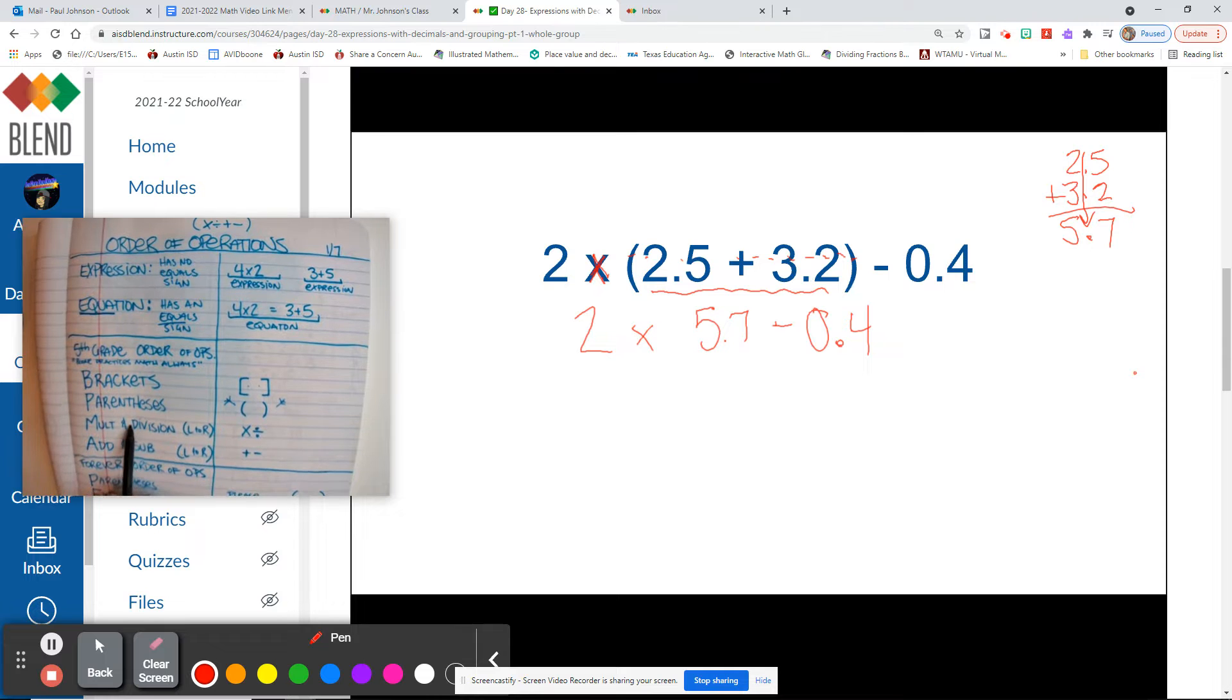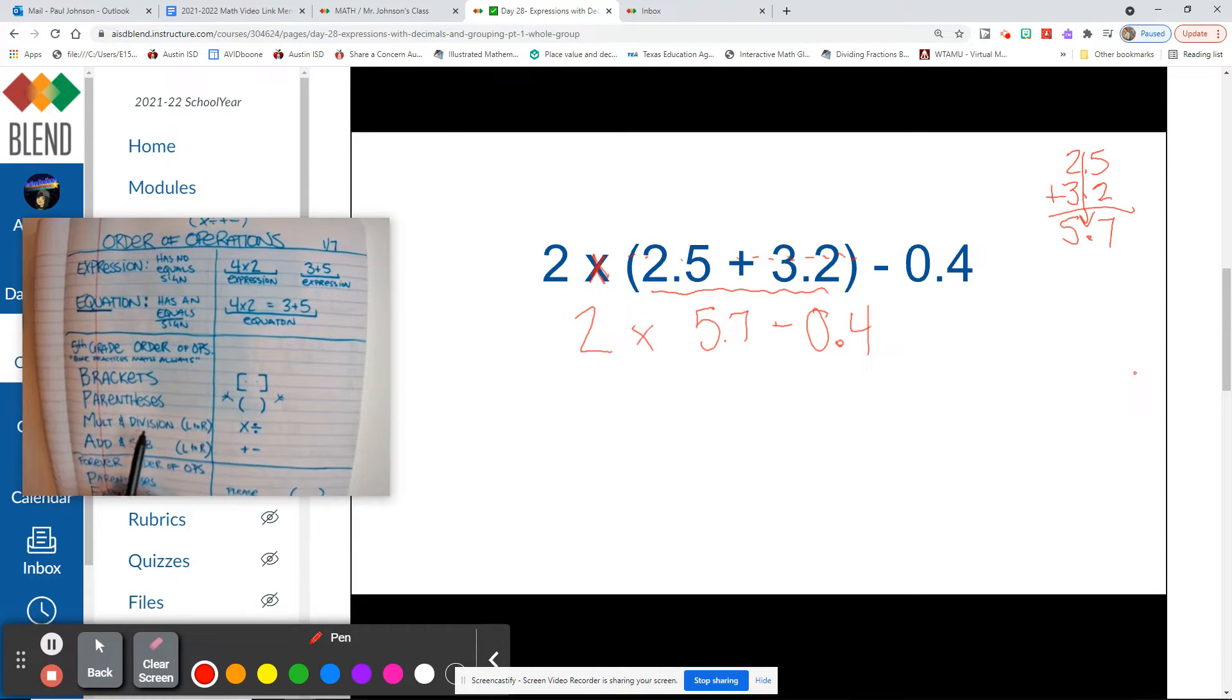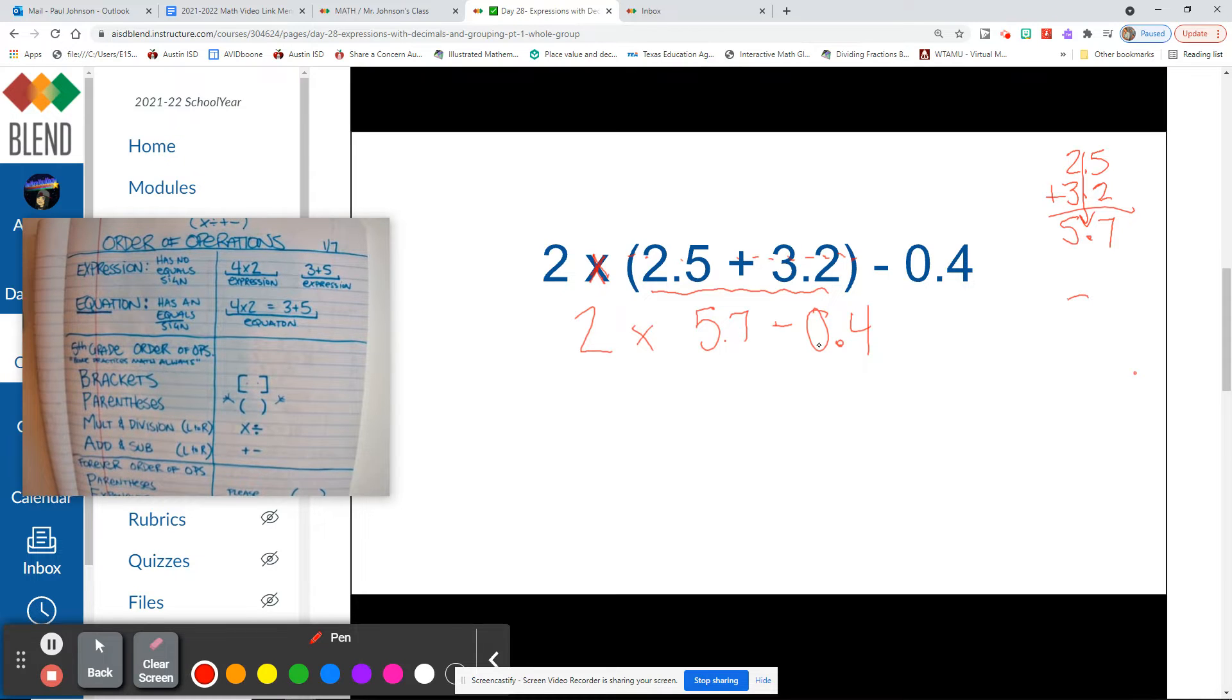Because once we take off our parentheses goggles, we put on our multiplication and division goggles. And we have to multiply 5 and 7 tenths times 2. So once again, I am going to do my math to this side. 7 times 2 is 14, carry the 1. 2 times 5 is 10, plus 1 is 11. One decimal place in my problem, so one decimal place in my product. So now, I have kind of taken care of 2 times 5 and 7 tenths. So 2 times 5 and 7 tenths was 11 and 4 tenths.